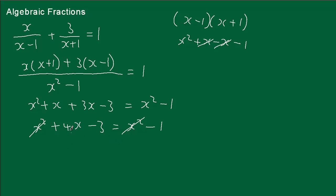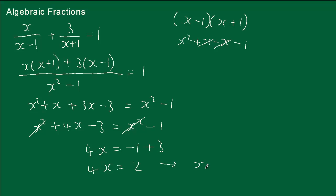Now I'm going to simplify by taking the minus 3 to the other side — it becomes plus 3. Adding 3 to both sides: 4x equals minus 1 plus 3, which is 2. So x equals 2 over 4, which simplifies to one half.